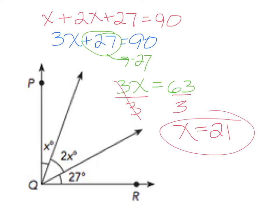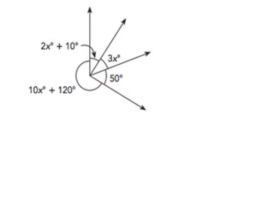Let's look at this next one. First thing you need to know is this is not going to be using a right angle, but this is using a full circle. Now, full circles are 360 degrees. Let's go through and add up all of our x values. We have 10 plus 2 is 12, plus 3 is 15x. Now let's add our constants: we have 120, 130, plus 50 more is going to be 180.